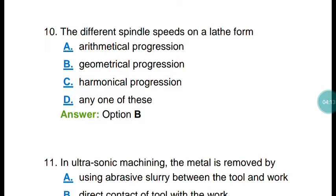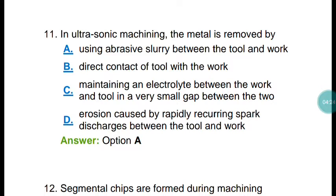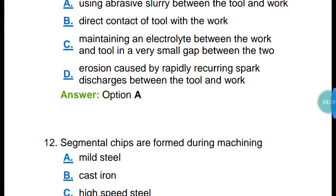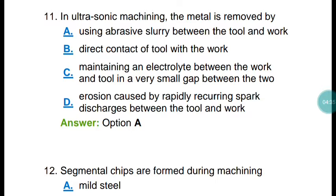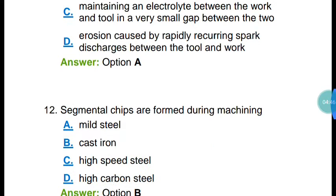Question number ten: the different spindle speeds on a lathe form a geometrical progression. Question number eleven: in ultrasonic machining, the metal is removed by which process? In ultrasonic machining, the metal is removed by erosion — specifically erosion caused by rapidly recurring spark discharge between the tool and work piece.